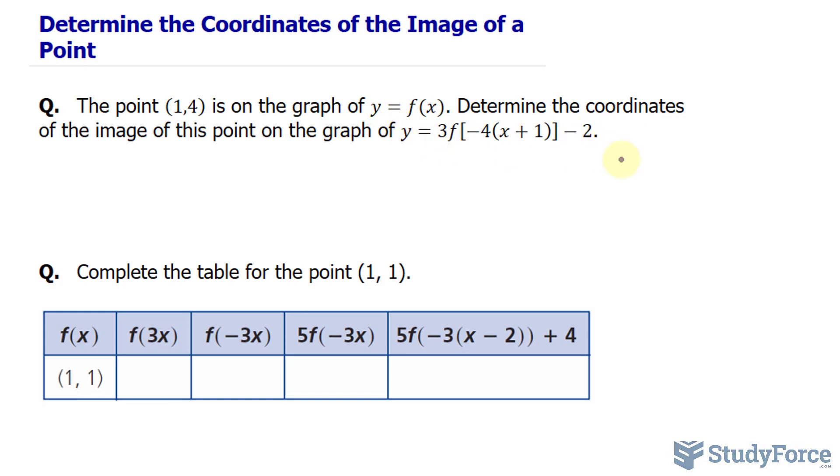Now notice in this expression right here, we have a function whose a value is 3. The k value, or the horizontal transformation, is negative 4. d relates to this value, and that is our constant c. So what they want us to do is transform this point (1, 4) as we apply each of these transformations.